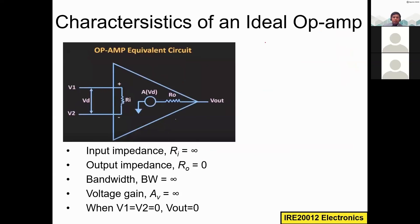What are the characteristics of an ideal operational amplifier? First, the input impedance — the input resistance of this operational amplifier is very high, approaching infinity. The output impedance, meaning the resistance at the output terminal, is almost zero. The bandwidth of this operational amplifier is also infinity.